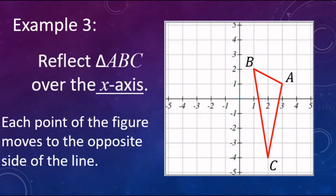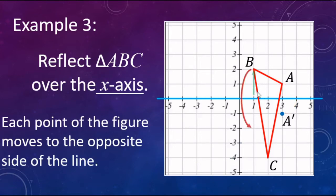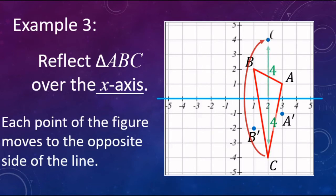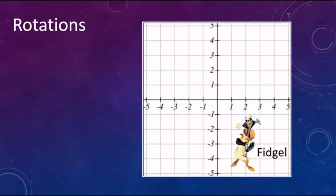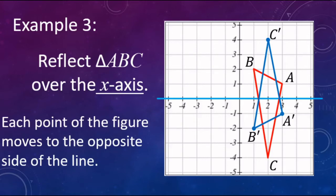We can also reflect over the x-axis. This one looks a little more confusing because it ends up overlapping, but each point moves to the opposite side of the line. Point A is one above the line, so its reflection is one below. B is two units above, so B prime is two below. And C is four below the line, so its reflection is four above — C prime right there. Connect the dots, and there is the reflected image of triangle ABC: A prime, B prime, C prime.